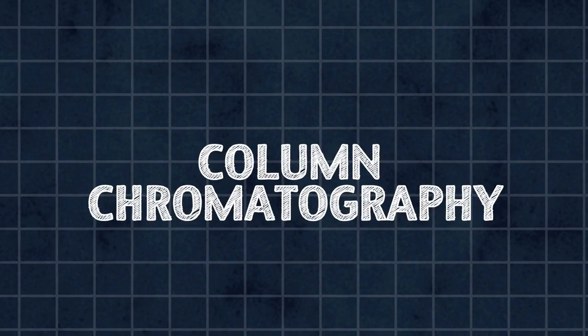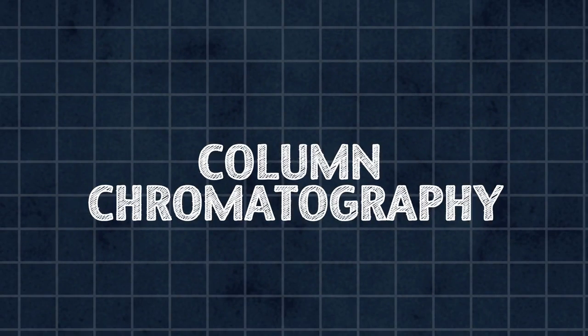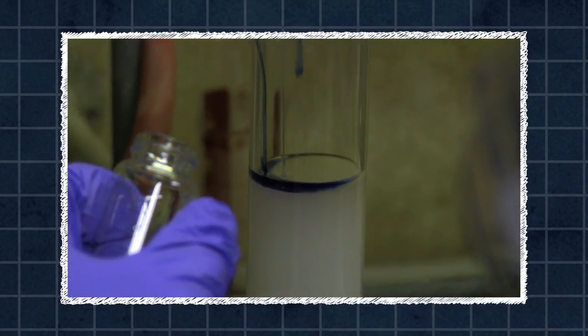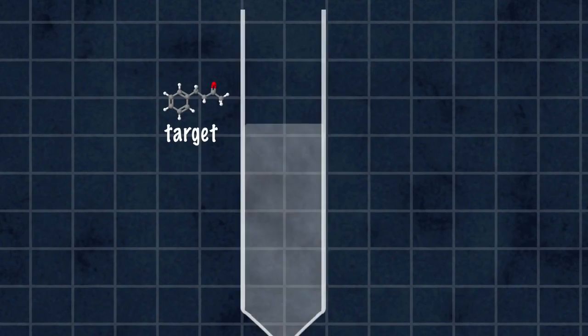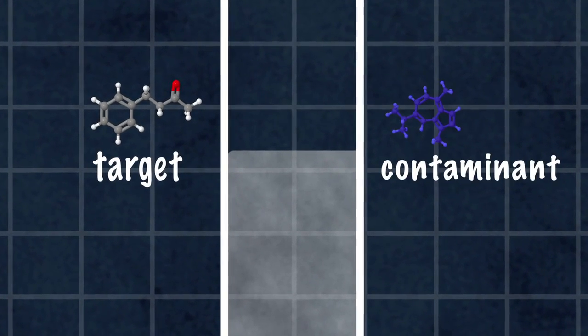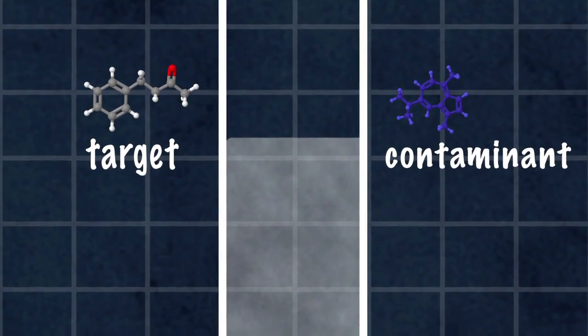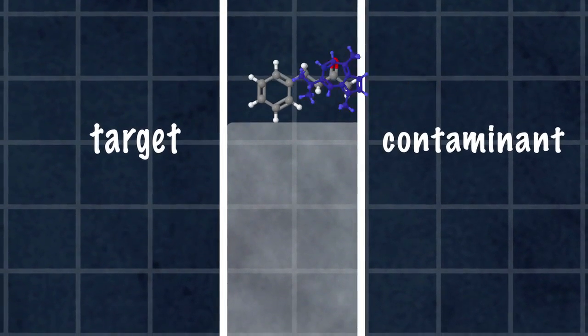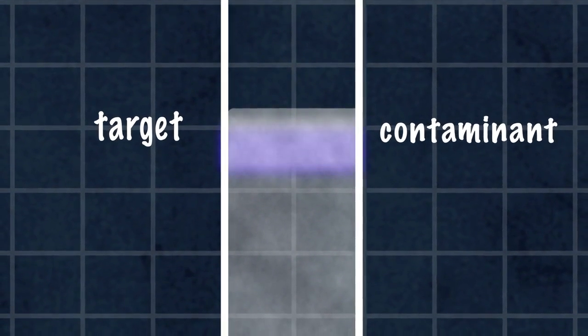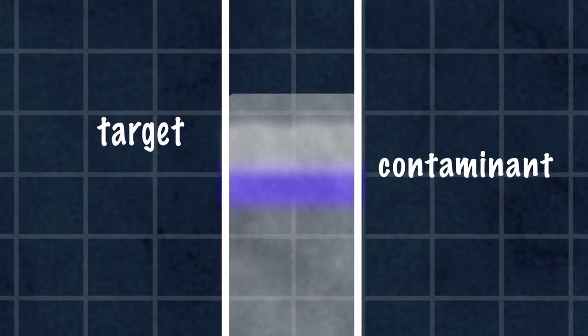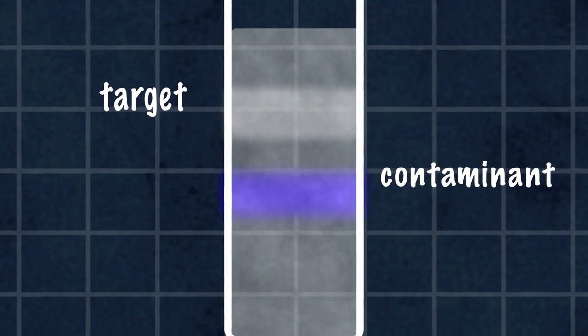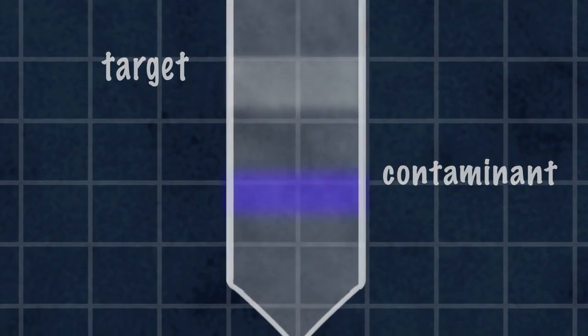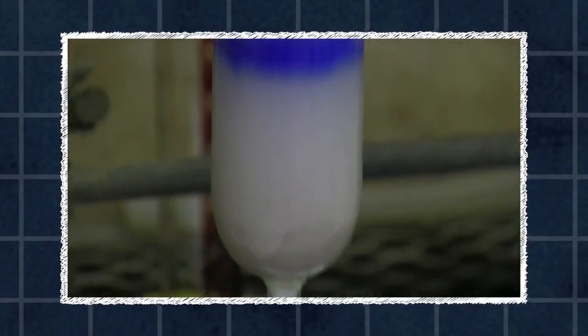Column chromatography is another way to separate mixtures. The students first pack the column with a special powder, then they load the mixture on top. The target molecule is benzyl acetone, and it's contaminated with guiazoline, a dark blue impurity. As the mixture is washed down the column, the target sticks to the solid powder more strongly than the contaminant. So the mixture separates into two narrow bands, which come out of the column at different times.